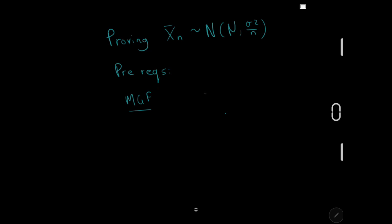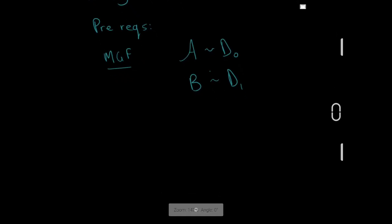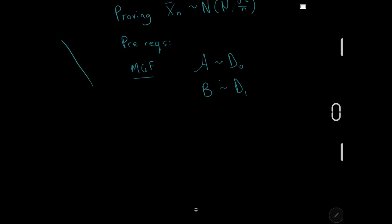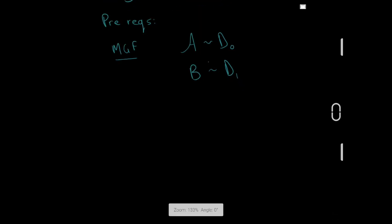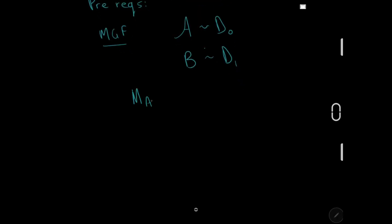Let's say I have some variable A distributed with some distribution D0, and another random variable B distributed with some other distribution D1. We're assuming that A and B are different, and D0 and D1 are different. However, if you can show that the moment generating function of A is equal to the moment generating function of B, then you have shown that D0 is equal to D1 — the distribution for A is the same as the distribution for B.